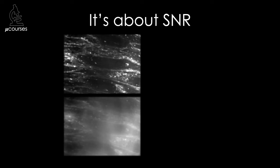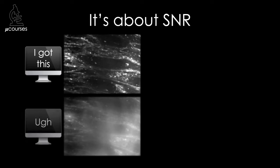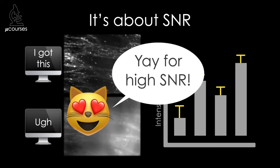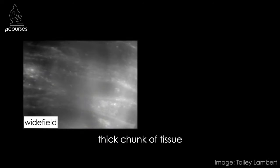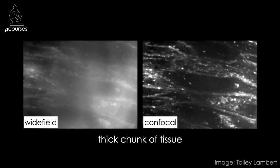Why is signal-to-noise ratio important? High signal-to-noise ratio images are generally easier to segment for image analysis, and will result in more precise measurements of intensity values and less error. Some biological specimens contain lots of out-of-focus fluorescence, and confocal microscopes can be used to increase the signal-to-noise ratio of images of these types of specimens.